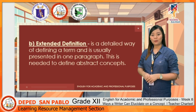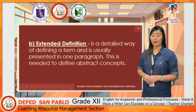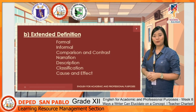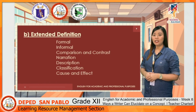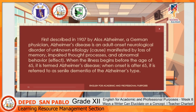The second technique of definition is extended definition. Extended definition is a detailed way of defining a term, usually presented in one paragraph. It is needed to define abstract concepts and incorporates various patterns such as formal or informal comparison and contrast, narration, description, classification, and cause and effect. For example, a paragraph defining Alzheimer's disease describes it as an adult-onset neurological disorder first described in 1907 by Alice Alzheimer, manifested by loss of memory, impaired thought processes, and abnormal behavior.